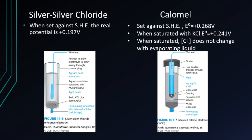Here is a reiteration of the structures of the silver-silver chloride and the calomel electrodes. The silver-silver chloride electrode is 0.197 volts vs. SHE, and the saturated calomel electrode is 0.241 volts vs. SHE. When it is not saturated, it's actually 0.268 volts. When saturated, the Cl⁻ concentration does not change with evaporating liquid.